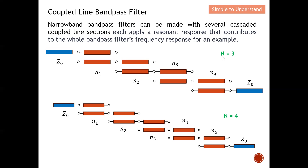When N is equal to 3, we need four cascaded coupled-line sections to achieve the N=3 bandpass filter frequency response. When N is equal to 4, we need five coupled-line sections. In general, the number of coupled-line sections needed is N plus one. So when N equals 4, I need five cascaded coupled-line sections to implement this bandpass filter response.